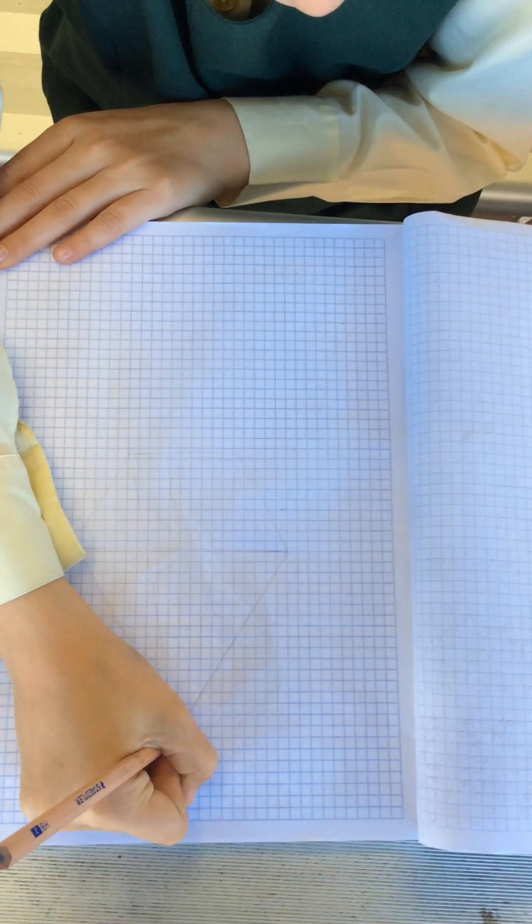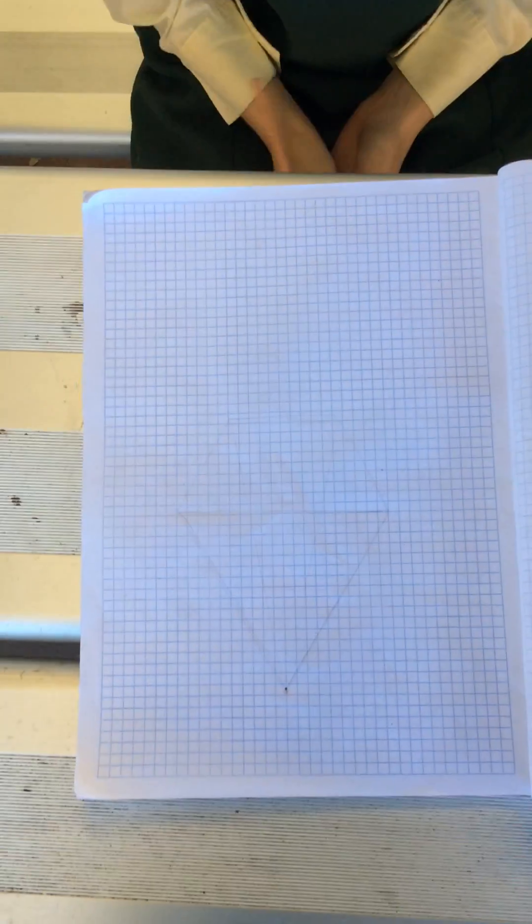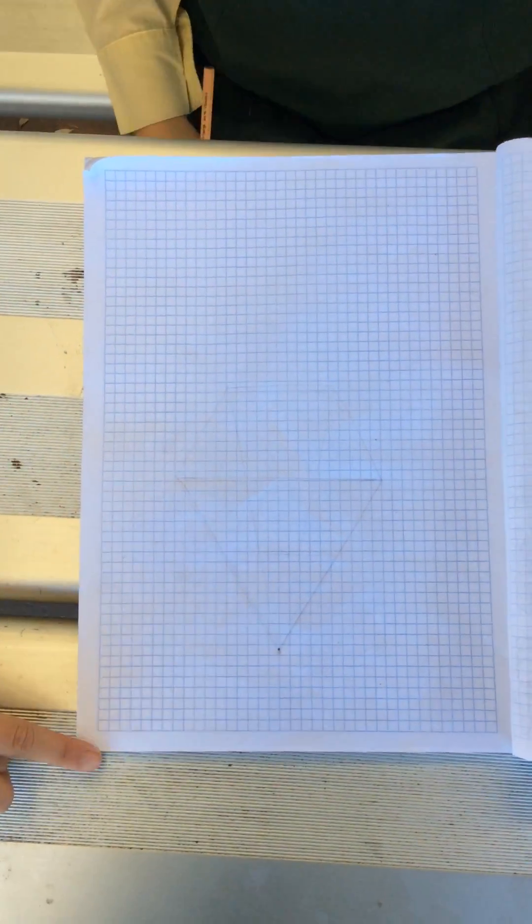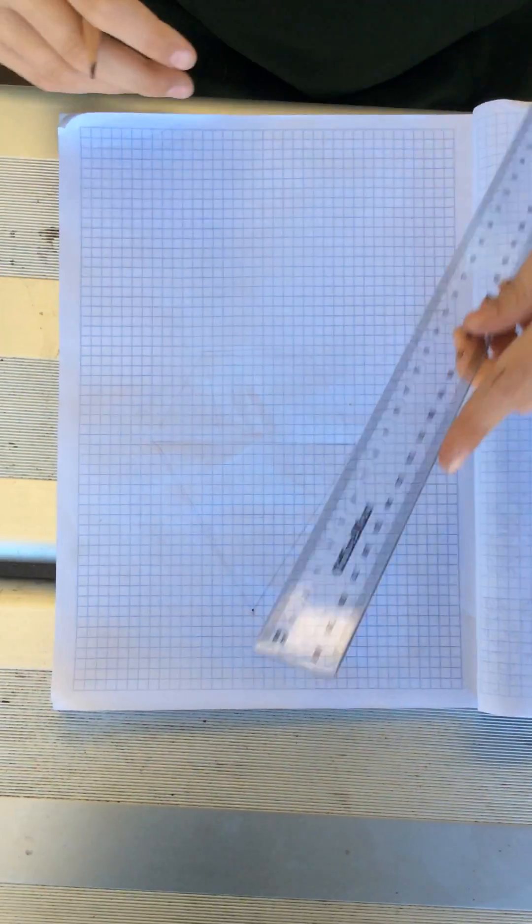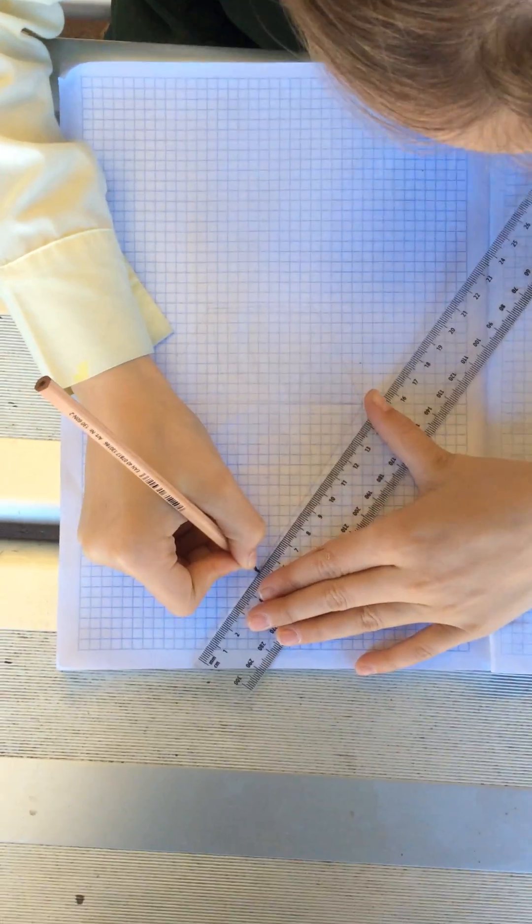Draw a dot at the top of your page which will become an apex for your pyramid. Then from that draw a 6cm diagonal line.